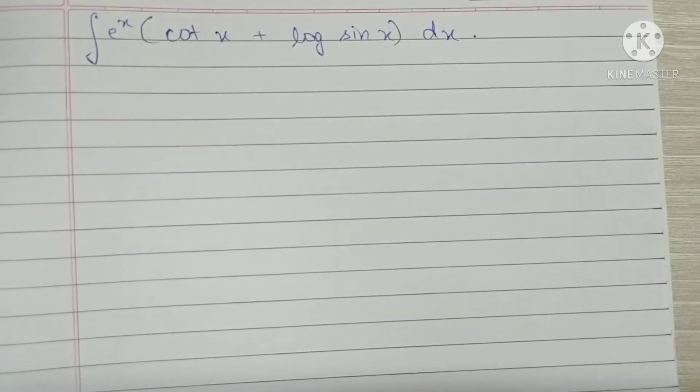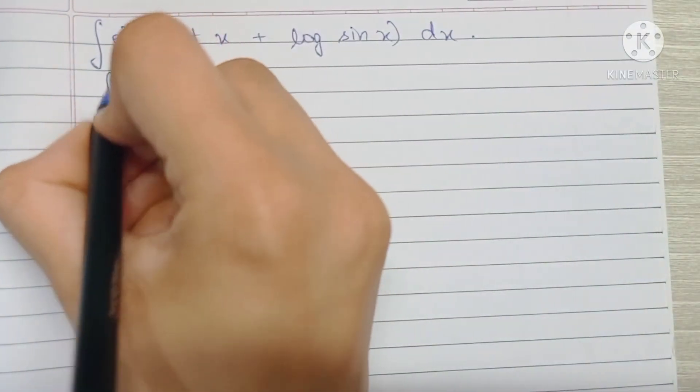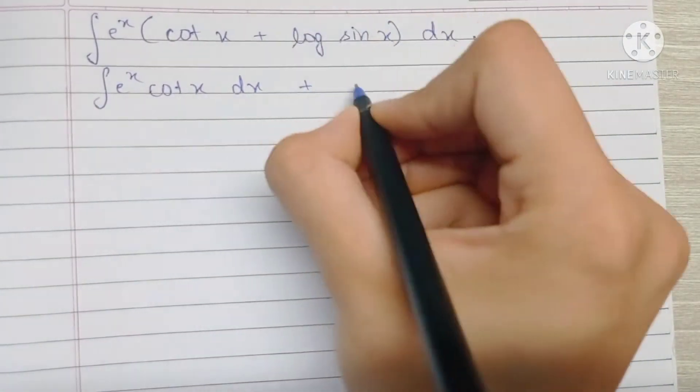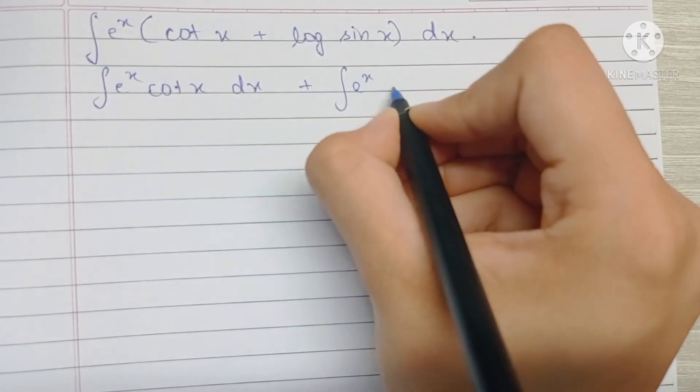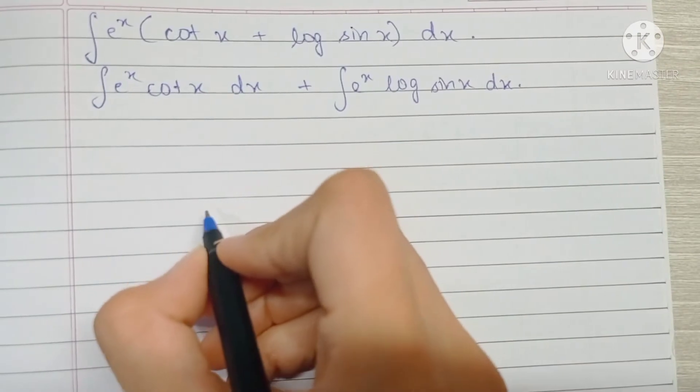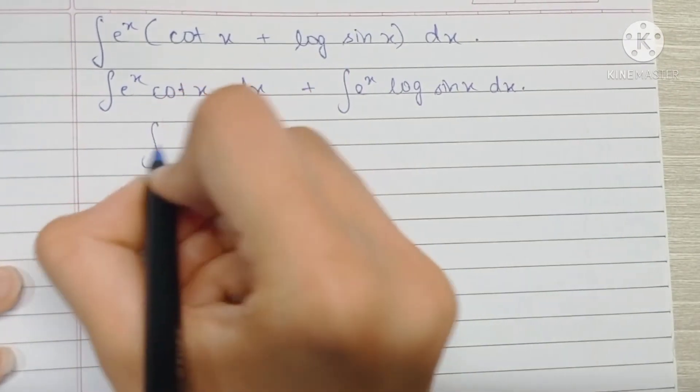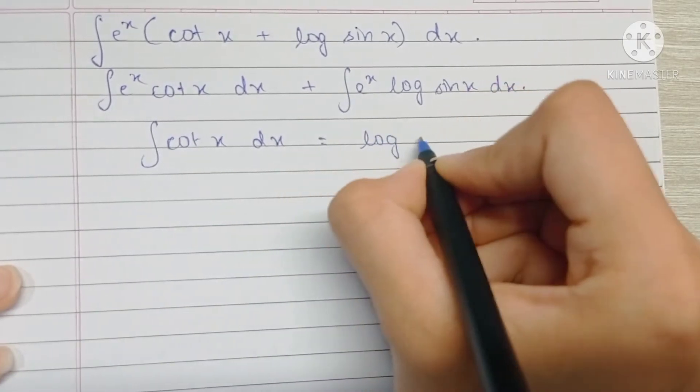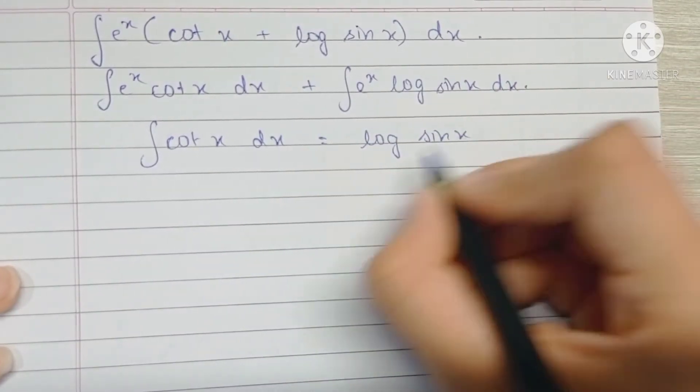First of all, we're going to write this as two different integrals. One is the integral of e raised to x cot x dx, and the second is the integral of e raised to x log sin x. We have one important observation: the integral of cot x is log sin x. So this is what we're going to use.